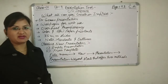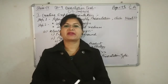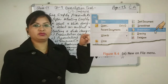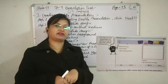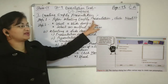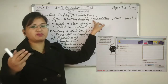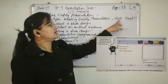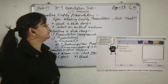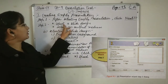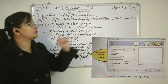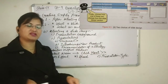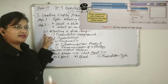We will start with empty presentation. When we click File > New > Presentation, the presentation wizard appears. In the wizard, choose empty presentation and click the Next button. In step 2, you will get options to select a slide design and select an output medium. In select a slide design, there is a drop-down with two options: presentation background and presentation.